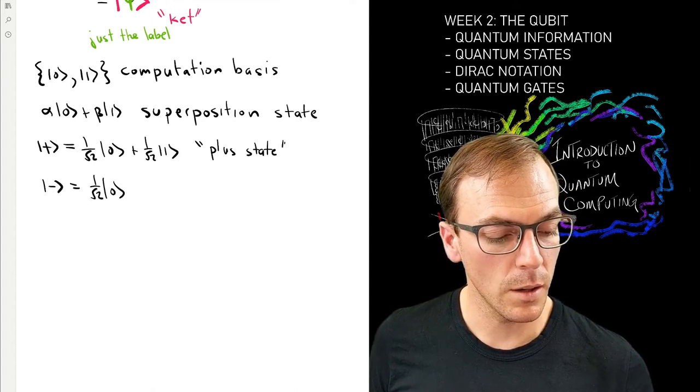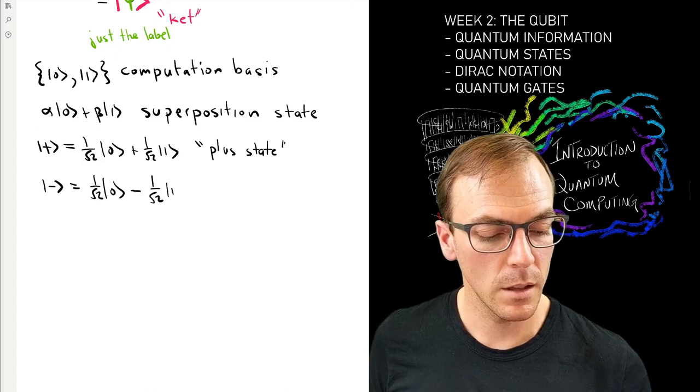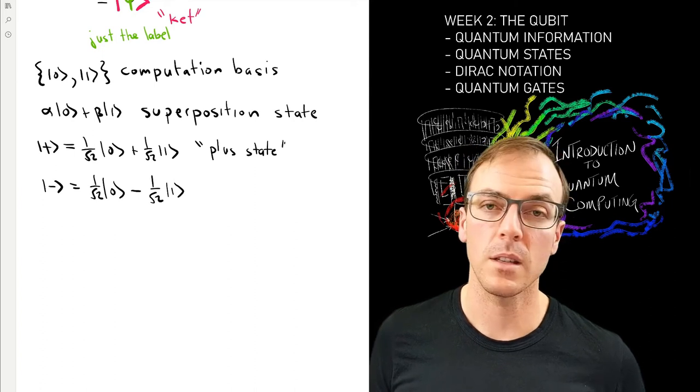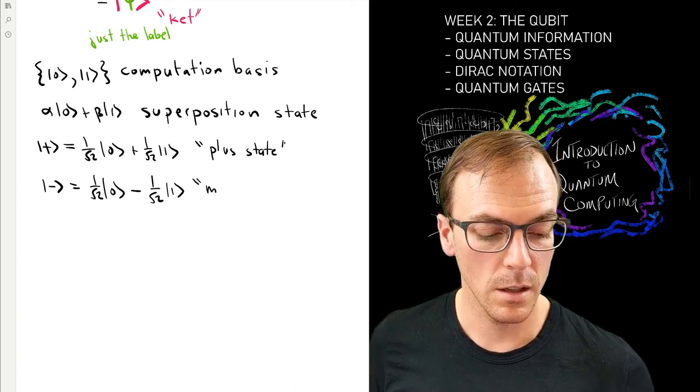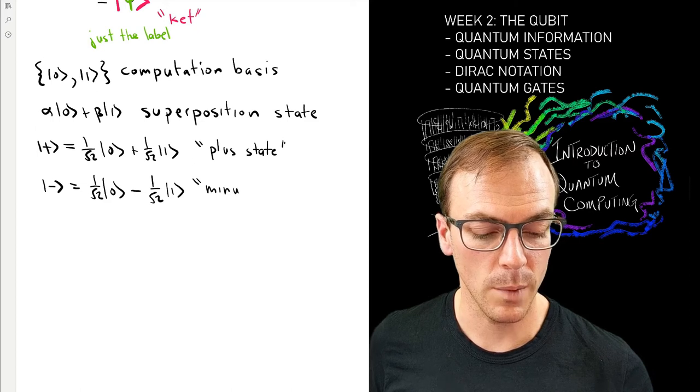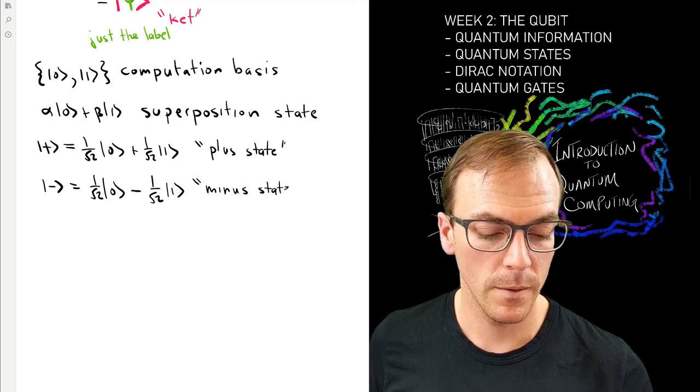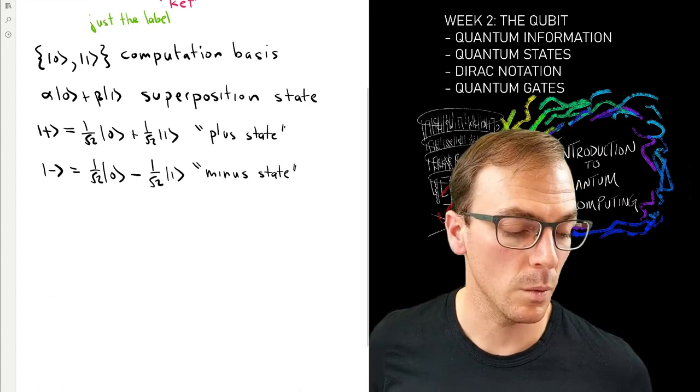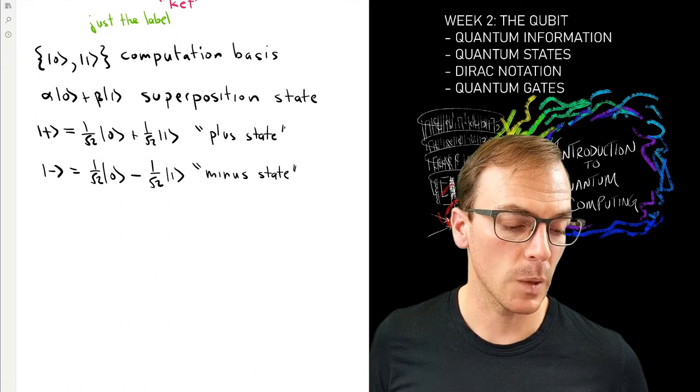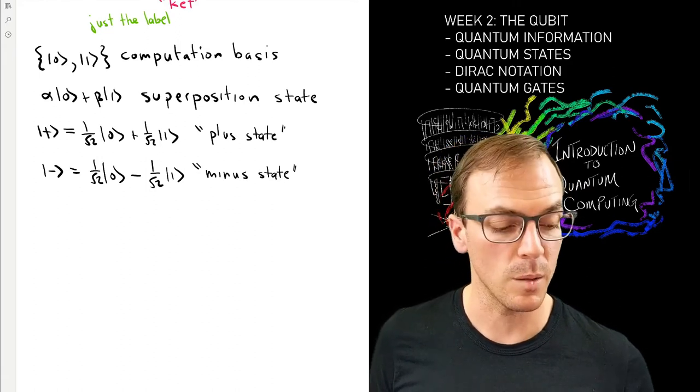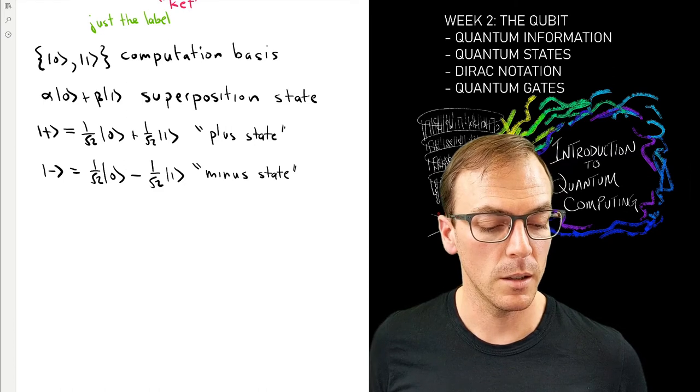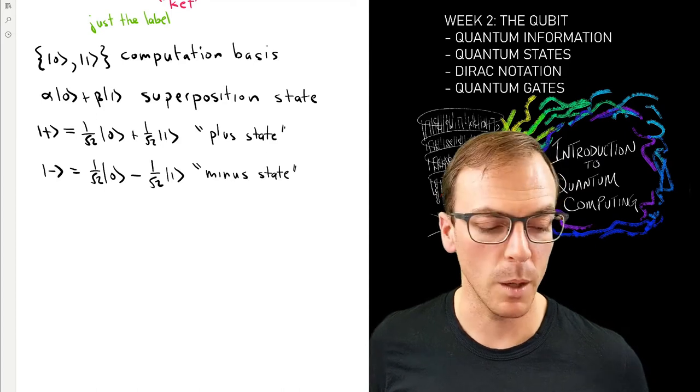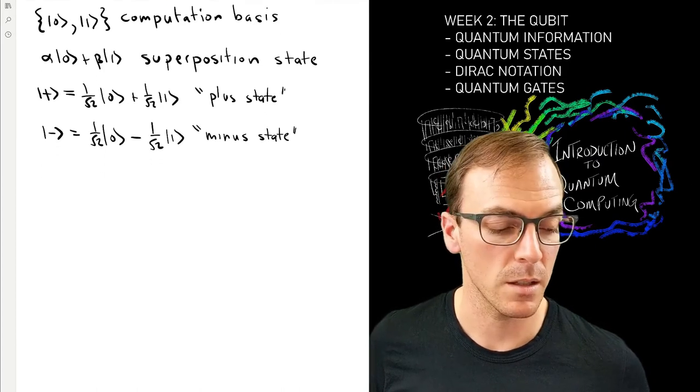And the one where there's a minus sign in front of the second computational basis state is called the minus state. These two very special kind of superposition states will crop up over and over again, so we give them these unique symbols worth committing to memory, if not you will remember them for the amount of time that you use them.